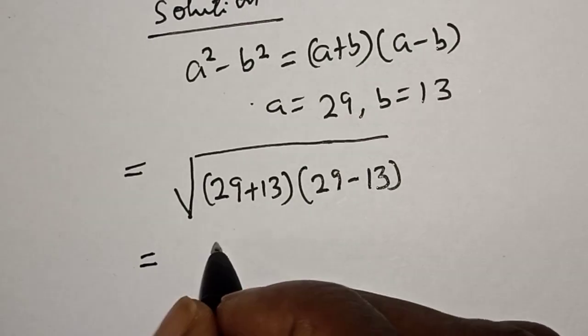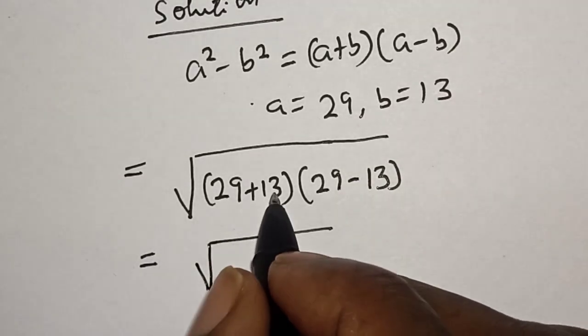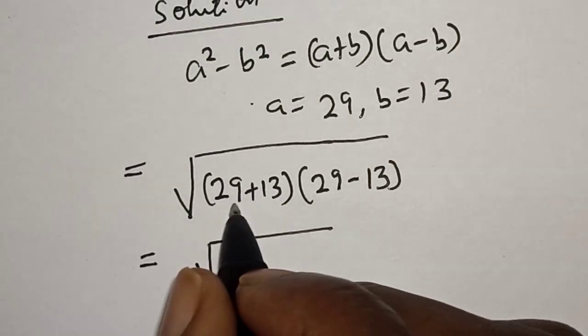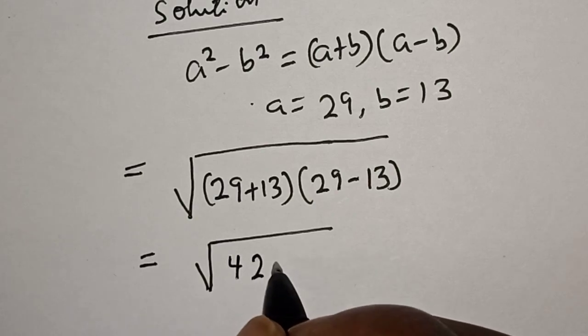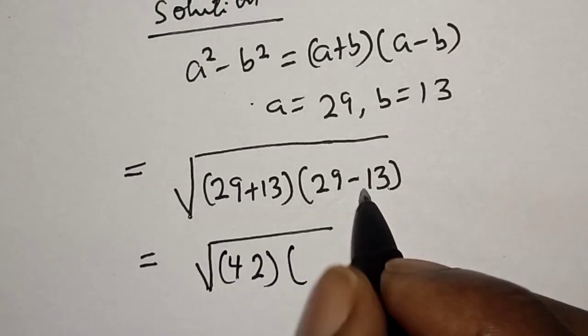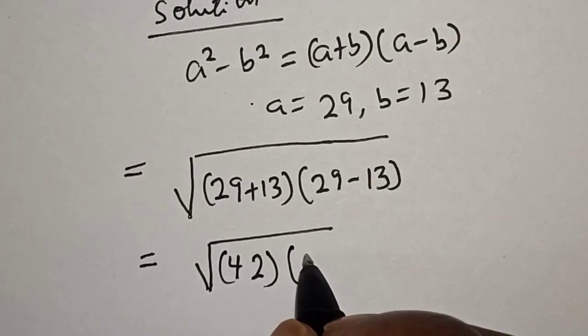And this is equal to square root of 29 plus 13, which is 42, multiplied by 29 minus 13, this is 16.